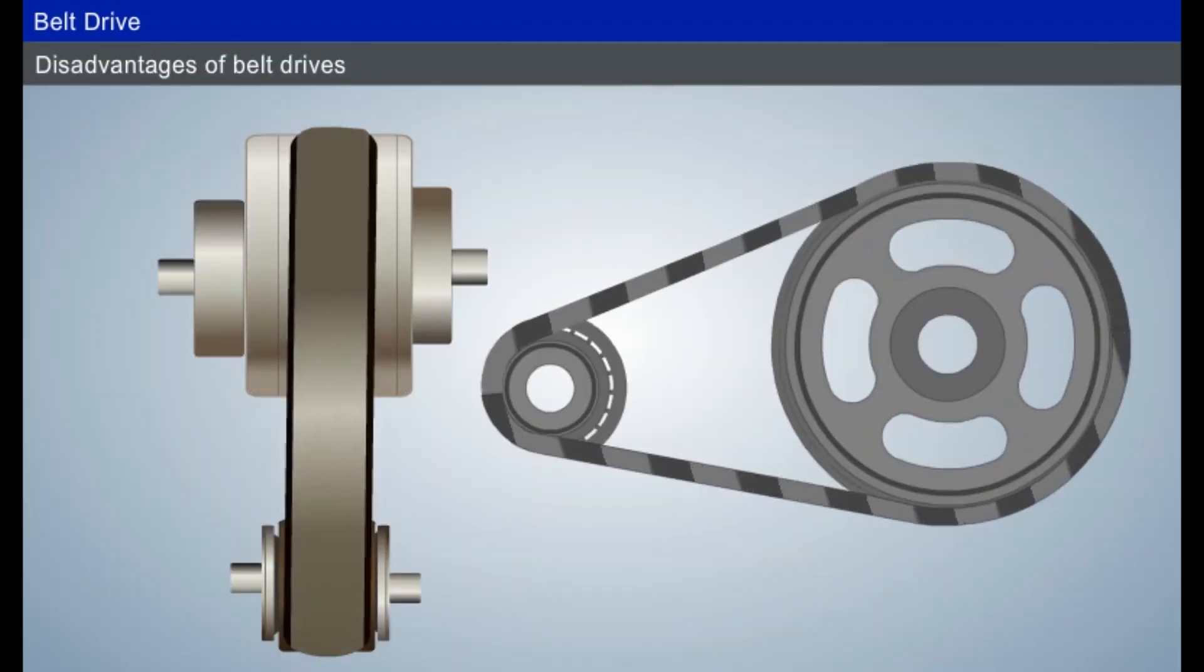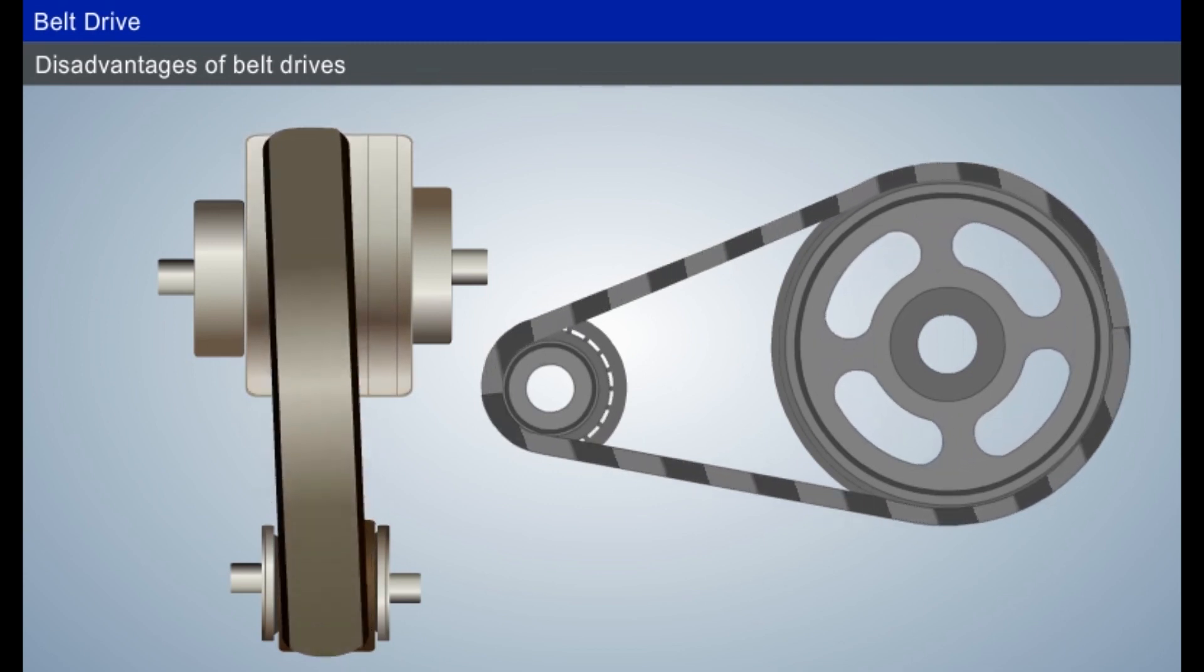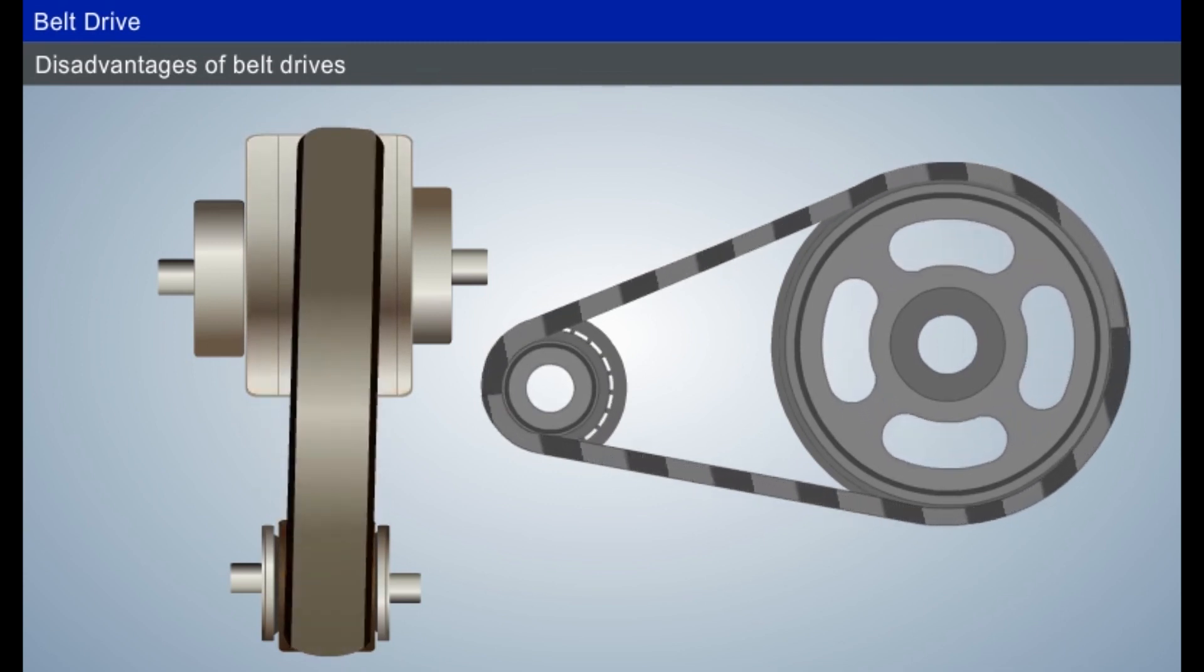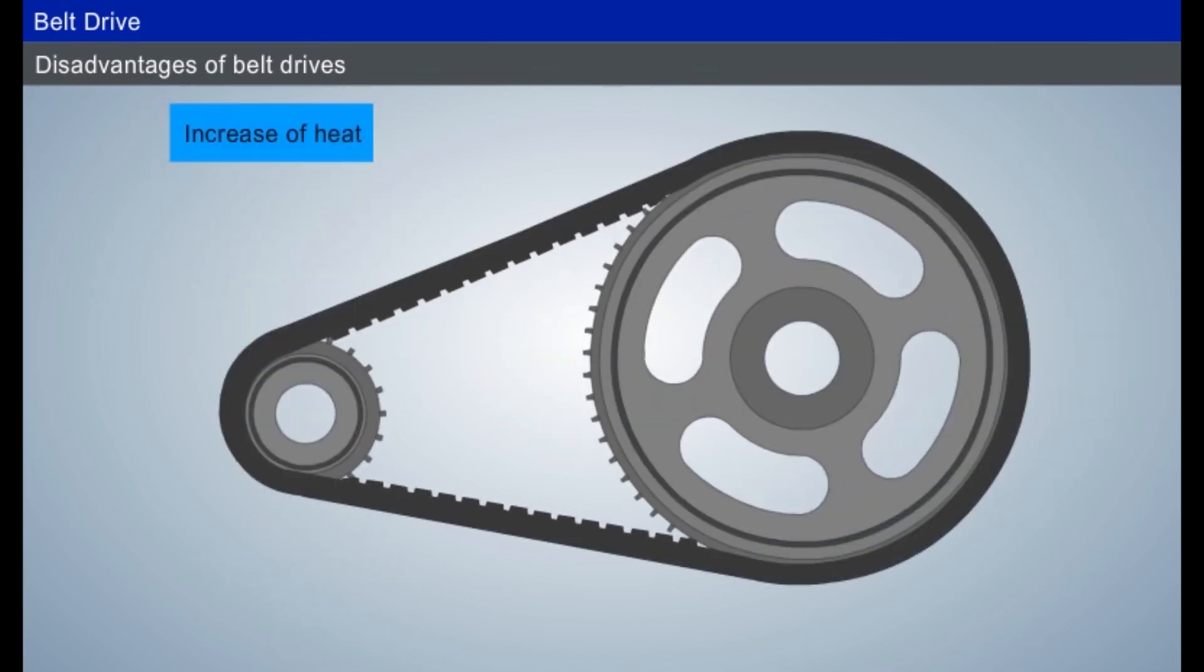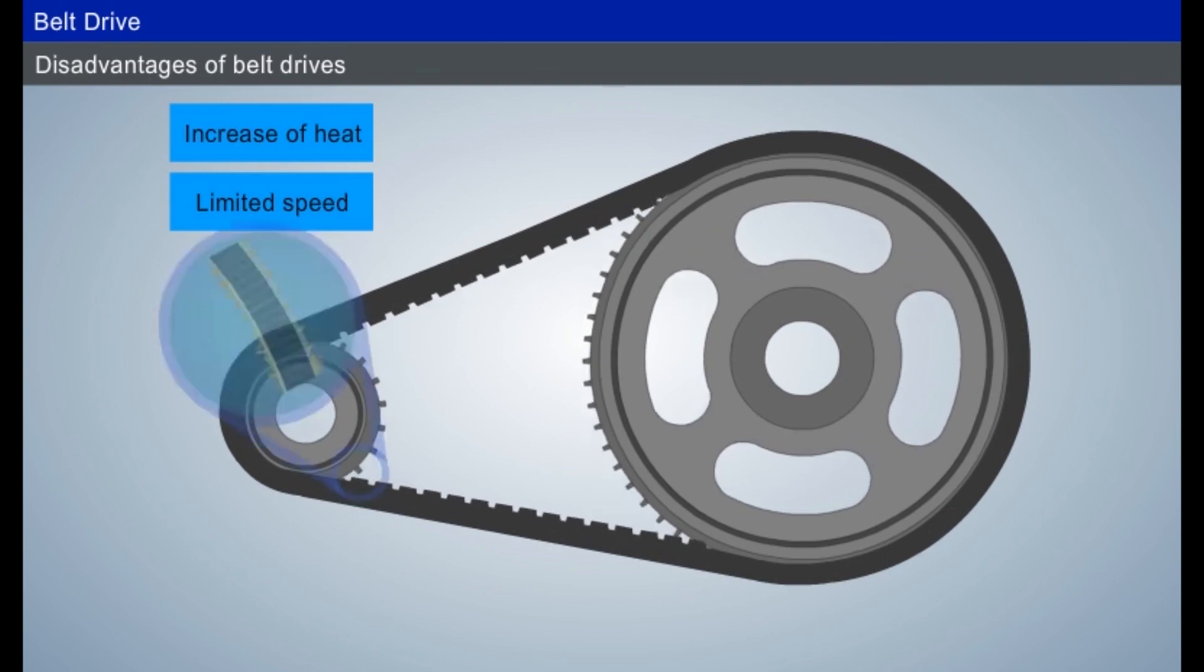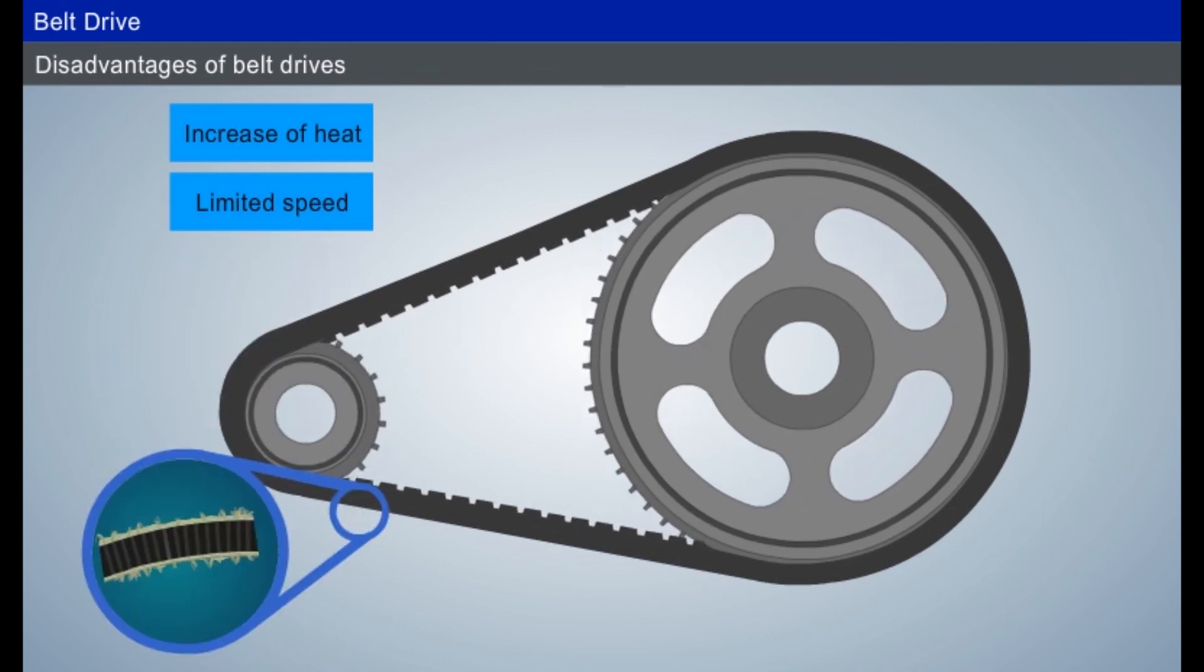Some of the disadvantages of belt drives are: Flat belt will slip over the pulley. Heat increases in the long run. Limited speed. Since the edges of the belt wear out fast, its life is short.